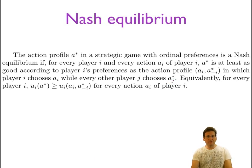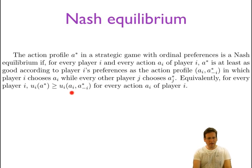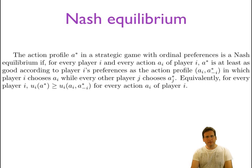Equivalently, we can say this very concisely mathematically: for every player i, the utility or payoff to player i of action profile a star is greater than or equal to the utility or payoff to player i of another action profile in which everybody chooses according to a star except player i, who chooses some other action a sub i. In other words, no player can be better off by unilaterally deviating to some other action.